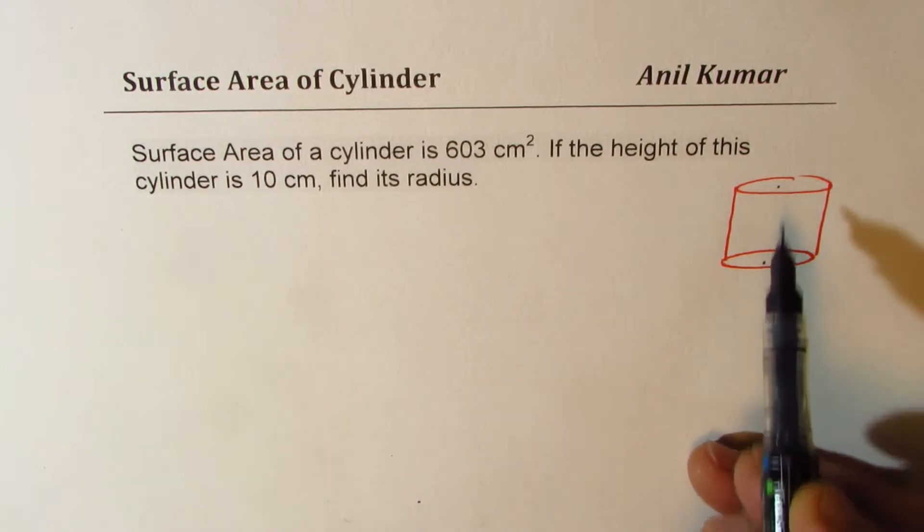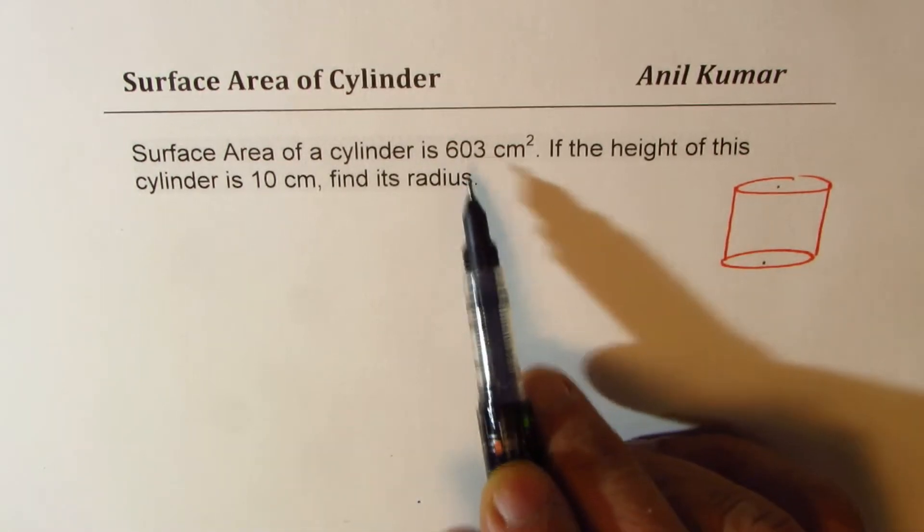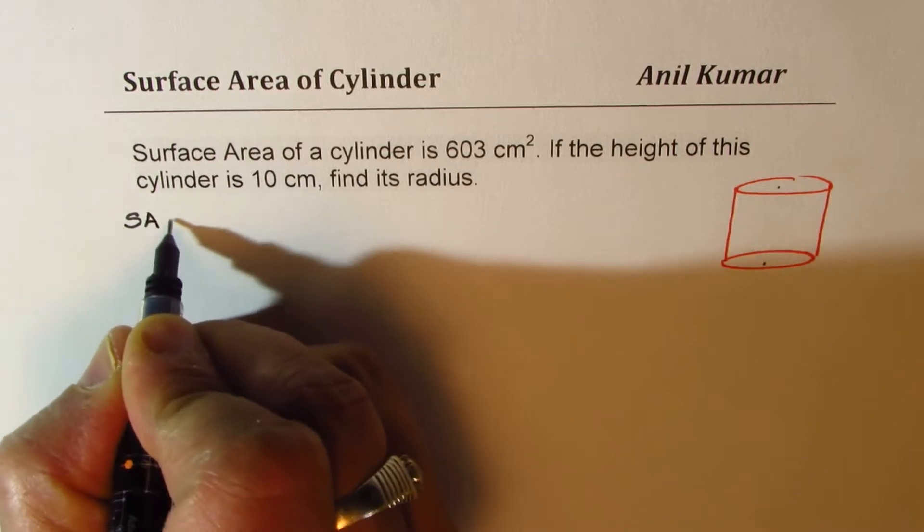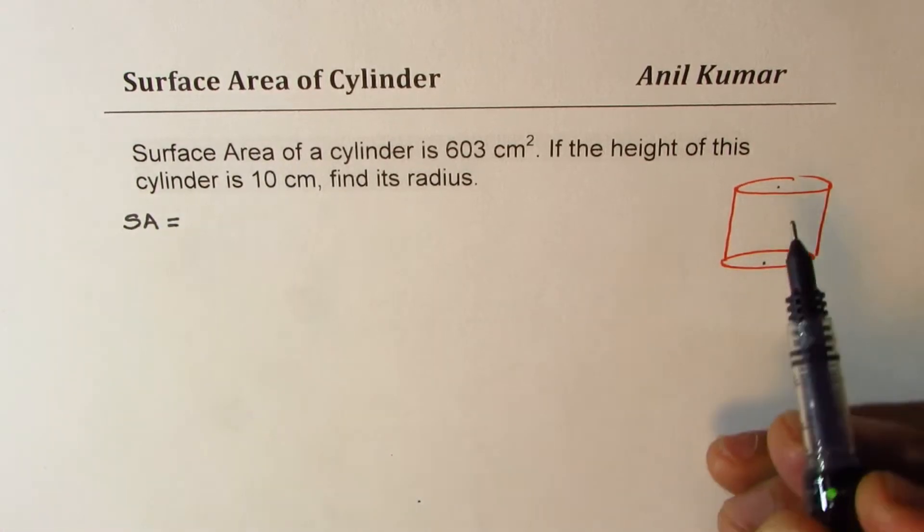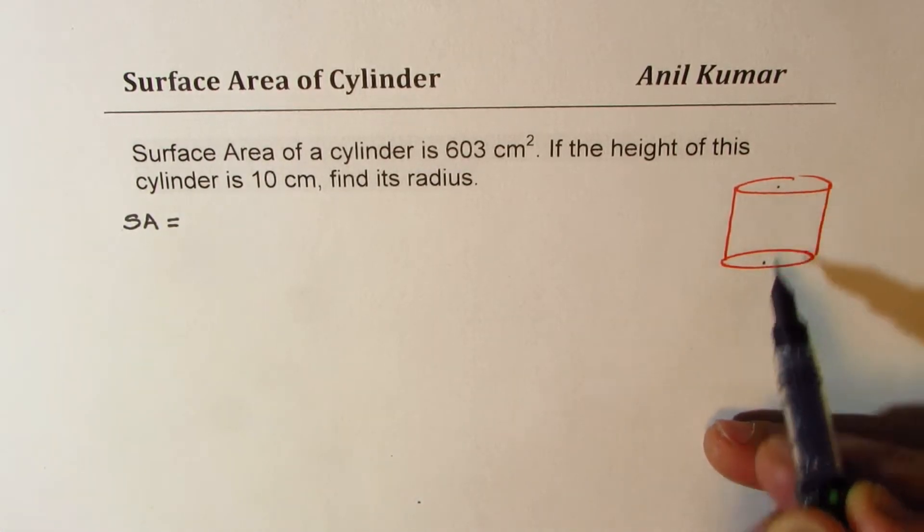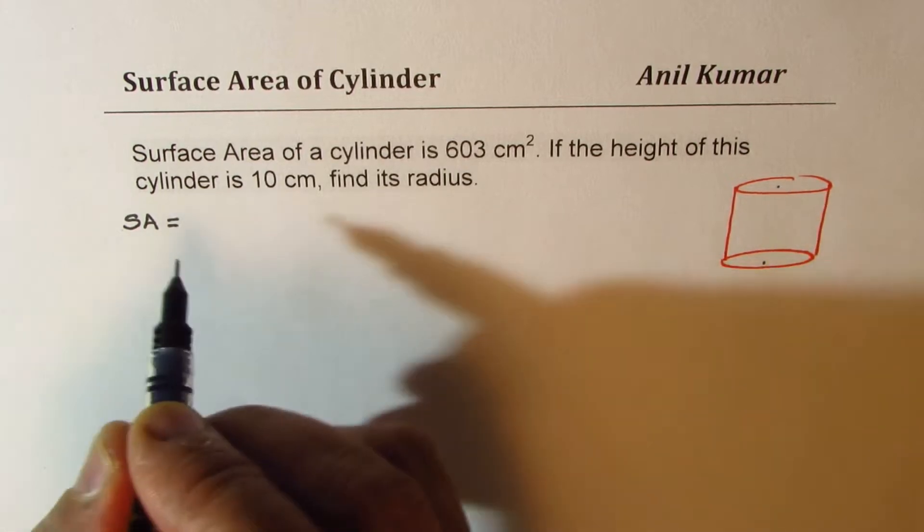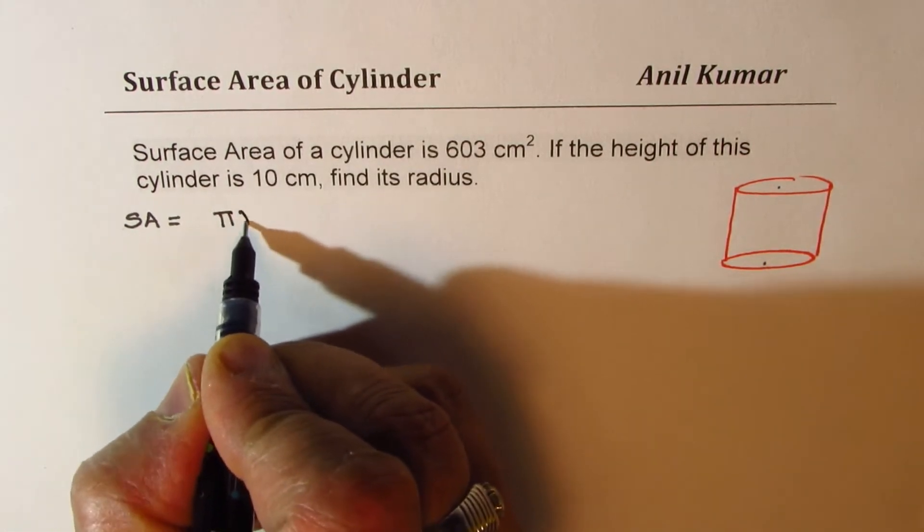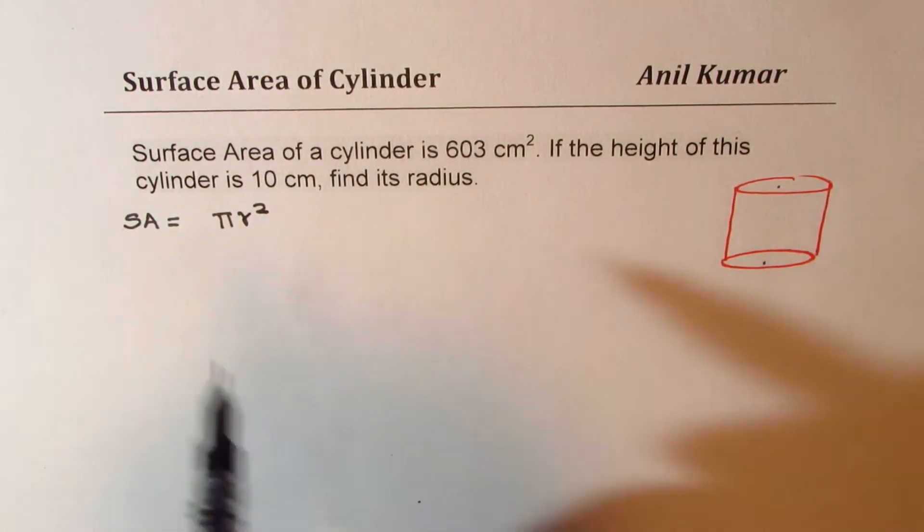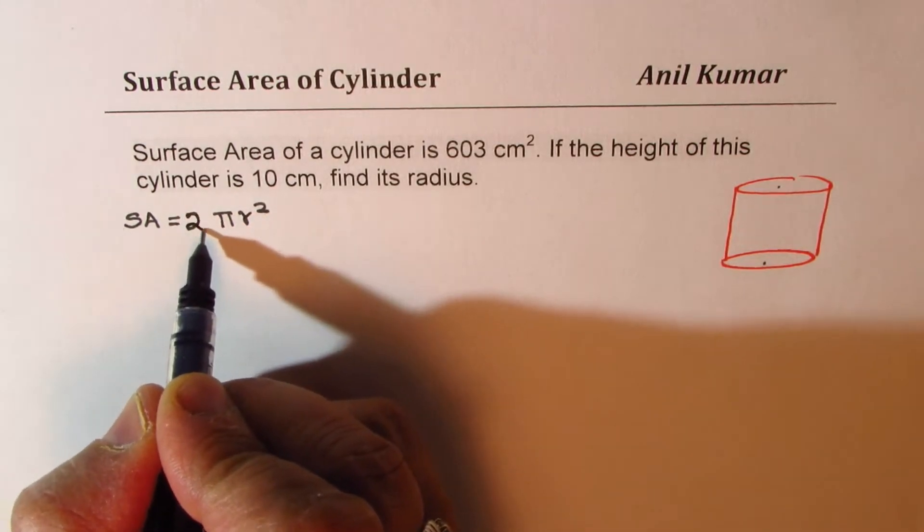So we are given a cylinder whose surface area is 603. Surface area of a cylinder, as you know, is area of top and bottom, which are circles. So area of each circle is πr². And since we have got two of them, we get 2πr².